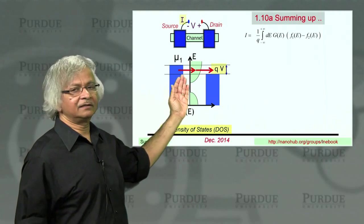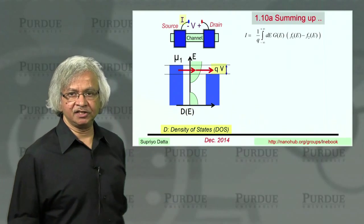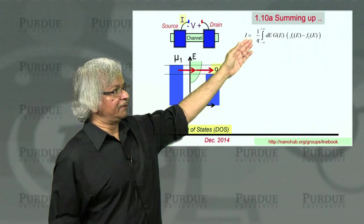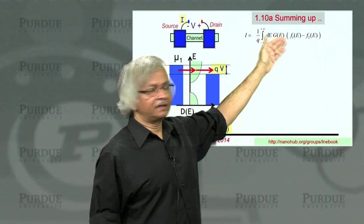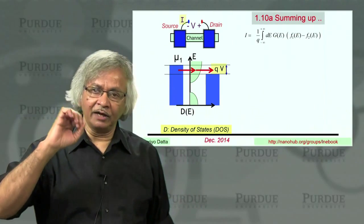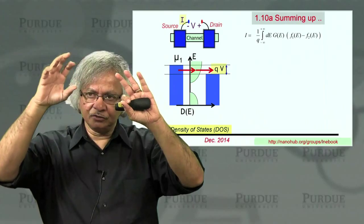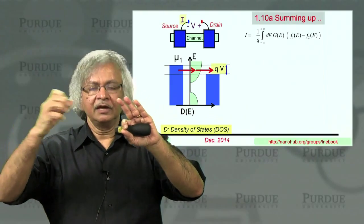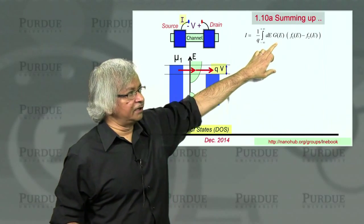Using the idea of elastic transport—electrons go from one contact to another without changing energy—you can write the current at any energy as a conductance function times the difference between F1 and F2. The essential point why current flows is that F1 is different from F2: one contact tries to bring the device into equilibrium with F1, another with F2, and in the process electrons keep coming in and going out.